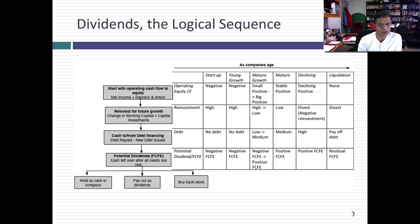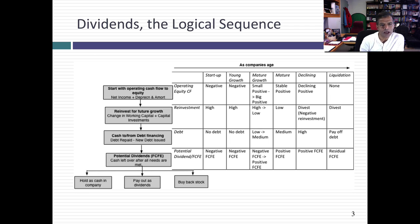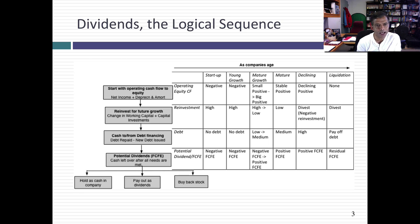A young startup should already have negative cash flows — you're losing money, you reinvest on top. It shouldn't be returning any cash. A young growth company still has negative cash flows: while you're making very little money, you're reinvesting a lot and you can't afford to borrow money. You shouldn't be paying dividends. As you mature as a company, you start to see your potential dividend open up. You're starting to make more money, and as your growth drops off, you're reinvesting less.